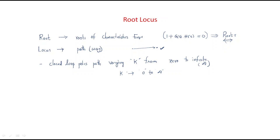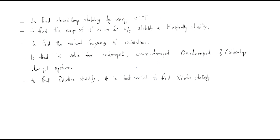By using this concept we will discuss system stability. Simply, root locus means the closed-loop poles have a path varying K from 0 to infinite. It starts from 0 and reaches infinite. The purpose of root locus is first to find the closed-loop stability.